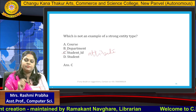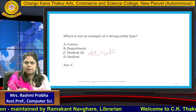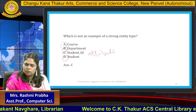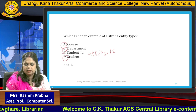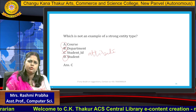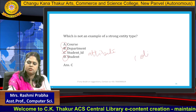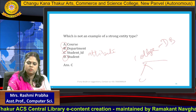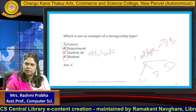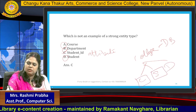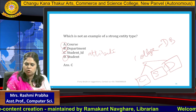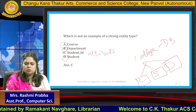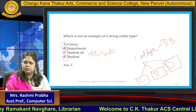Course, department, and student can all be entities. Student exists in the real world, course exists in the real world, and department also exists in the real world. Just take the example of your college — the college is the database, and within it we have courses, students, and several departments. A course can be commerce, arts, or science. That is why these are all strong entity types.